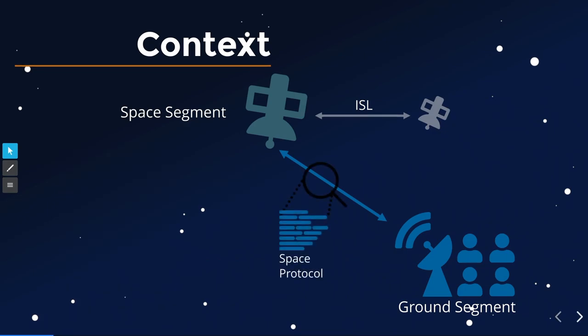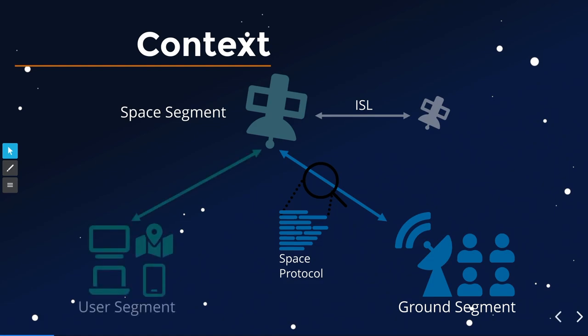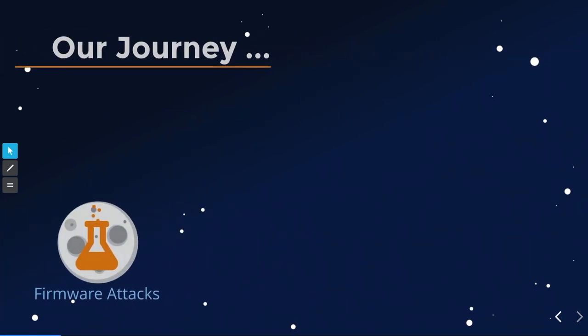The ground segment uses so-called space protocols, which we will go through in this talk, to command and control the satellites. The user segment is basically a collection of all devices that can receive a satellite service — your mobile phones, TV dish antennas on your roof, or a Starlink antenna.